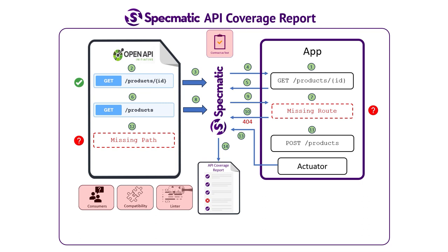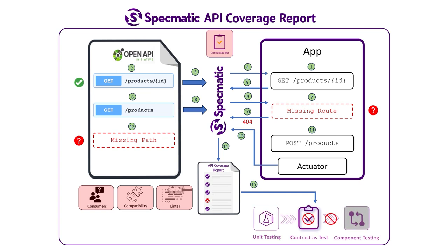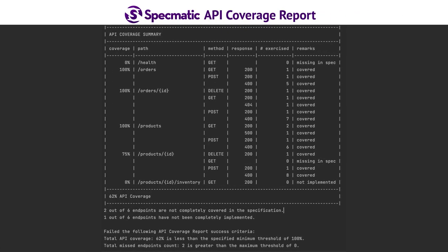We can also prevent these issues from propagating by failing the CI pipeline build if the API coverage report detects any mismatch. Here's a sample API coverage report — it lists all the endpoints of the application, reports the coverage for every endpoint, and indicates if the endpoint is missing in the spec or not implemented in the application.